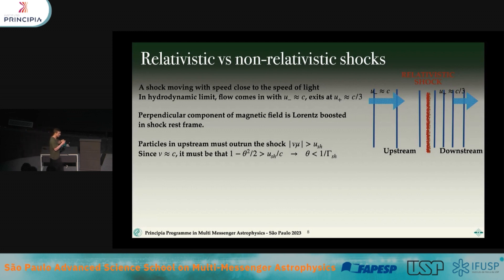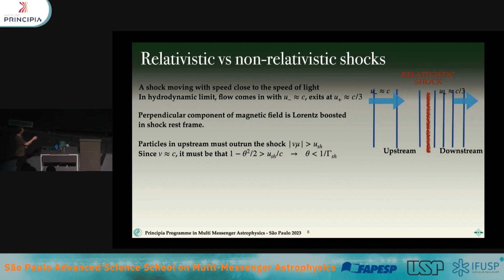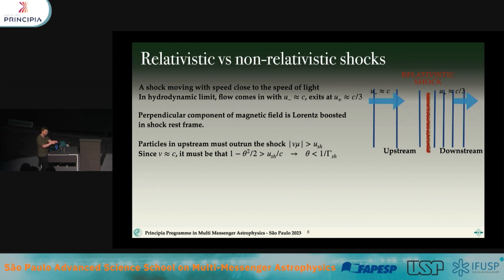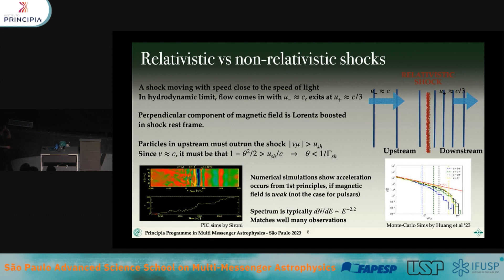This basically says the parallel component of the velocity must be greater than the shock velocity. Since this is very close to unity, all particles that can escape upstream are within a small loss cone of size one over the Lorentz factor of the shock. As soon as you leave that little cone, you're back downstream. You just poke your nose ahead of the shock, deflect a tiny bit, the shock overtakes you, and you're back downstream. This is a major difference between non-relativistic and relativistic shocks.